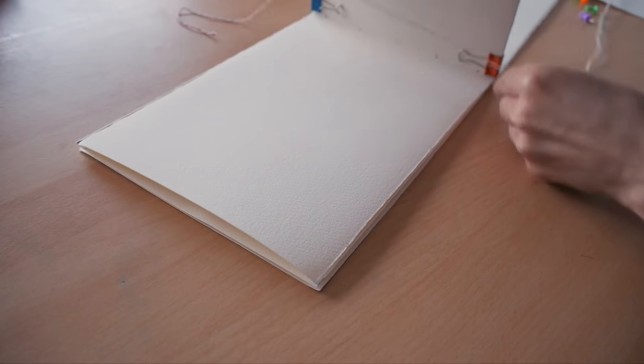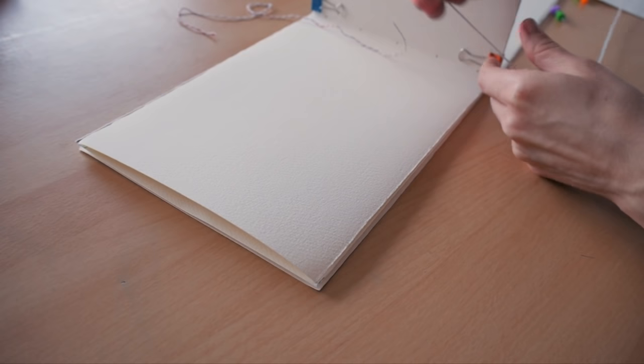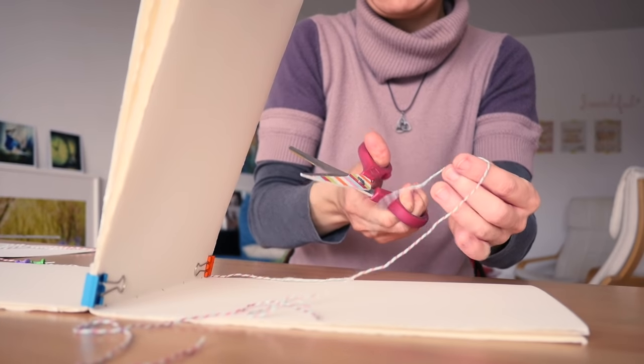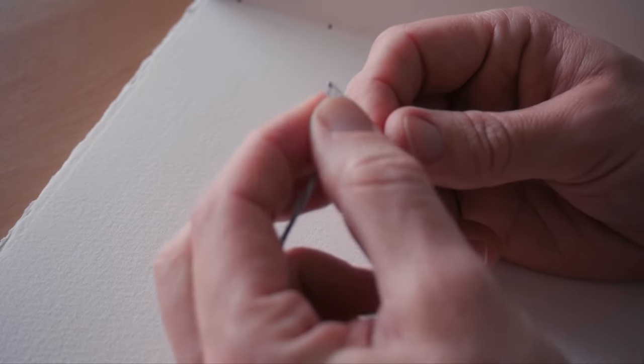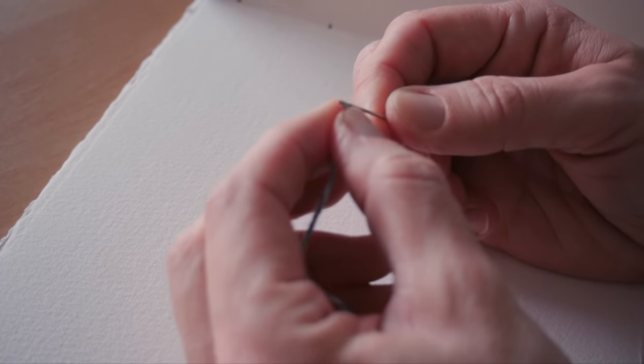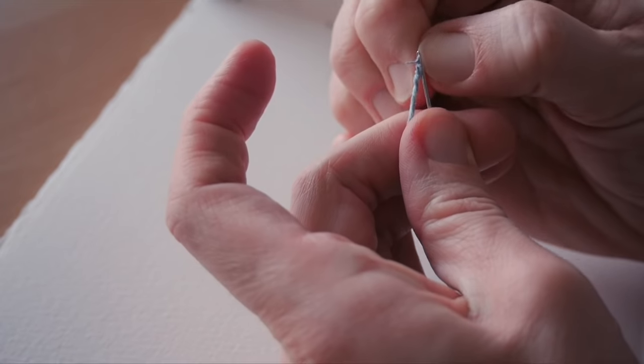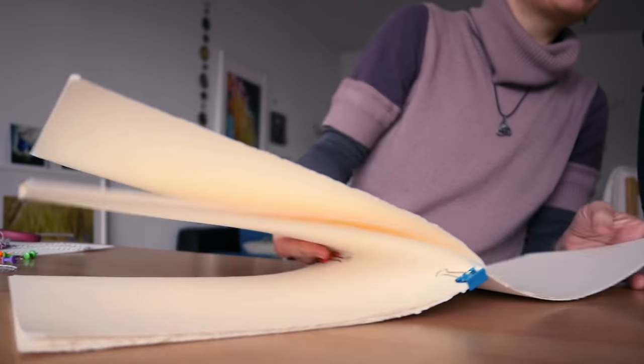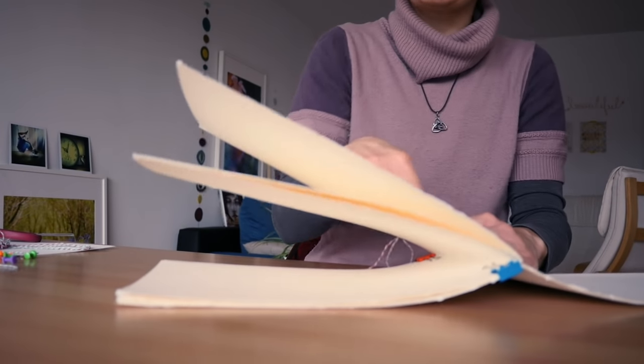For the length of the thread, you need about twice the distance, and a bit more. You can say twice and a half or three times. Putting the thread in the needle. You want the tail to be outside the sketchbook, so that it doesn't show inside.